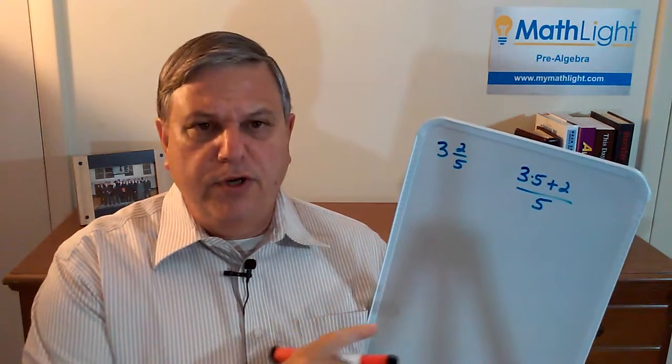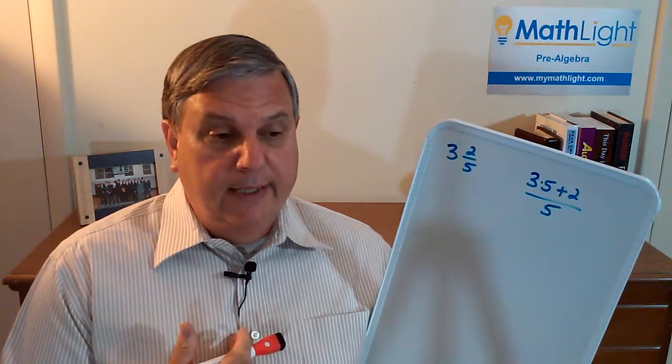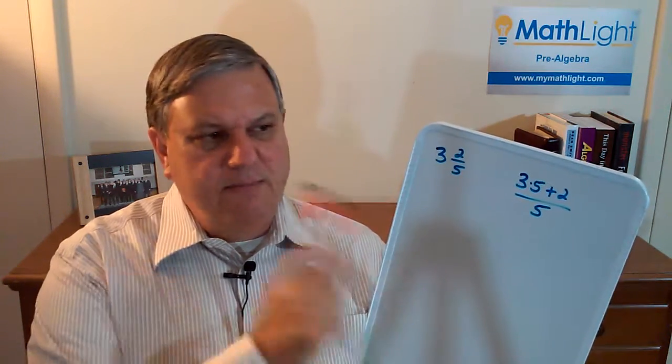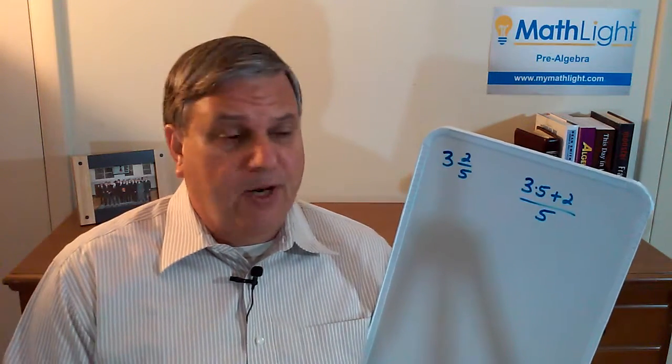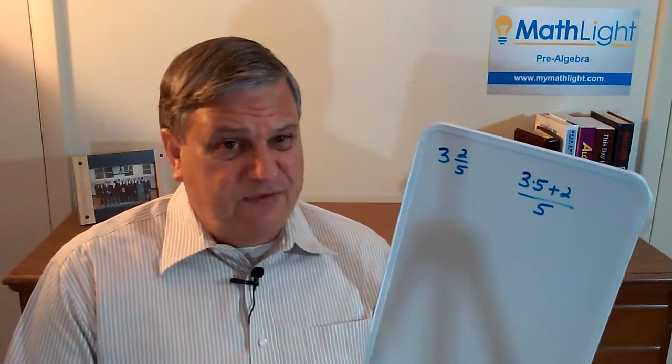So as we know, our students are pretty good, at least mine have been, and this has been pretty much every class. They can take a mixed number and easily turn it into an improper fraction. Not a problem. They know to do 3 times 5 plus 2 and divide by 5.